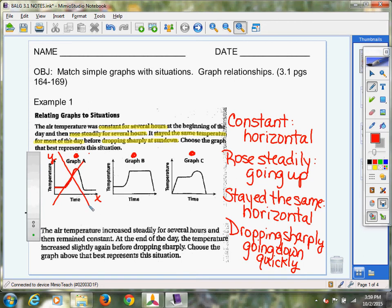So let's look at graph B. Here's where it's constant for a couple hours. It goes up for a couple of hours. It's staying the same, another horizontal line for most of the day. And then it's dropping sharply. Guys, I think we found it right here. That's the best one that fits.